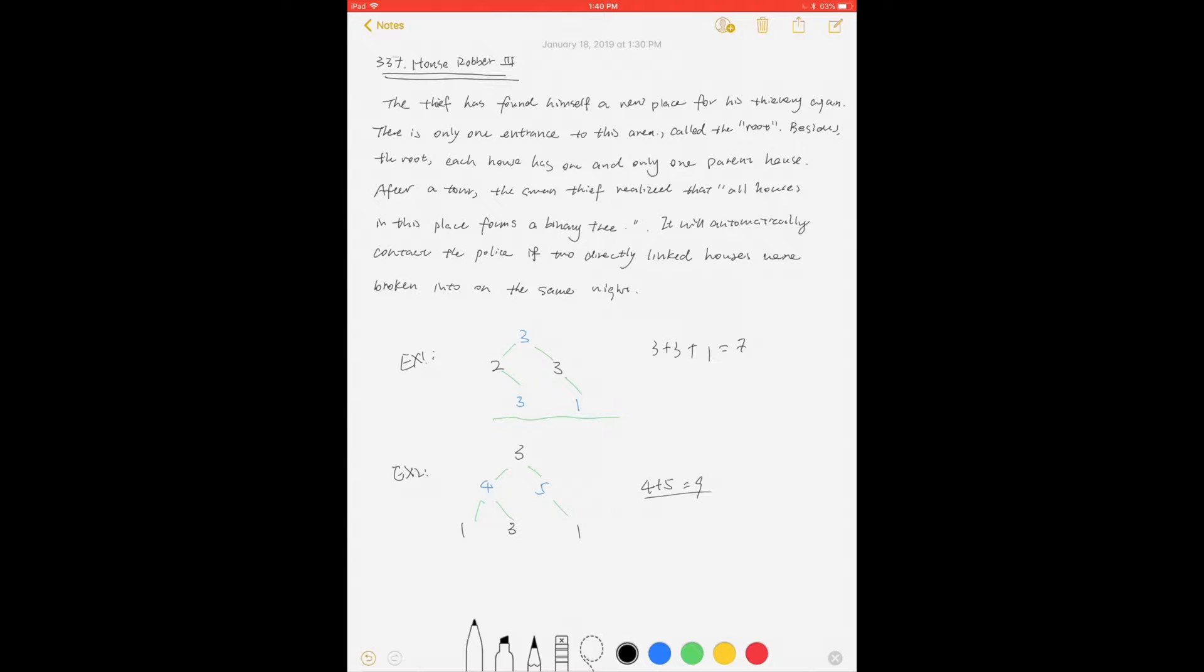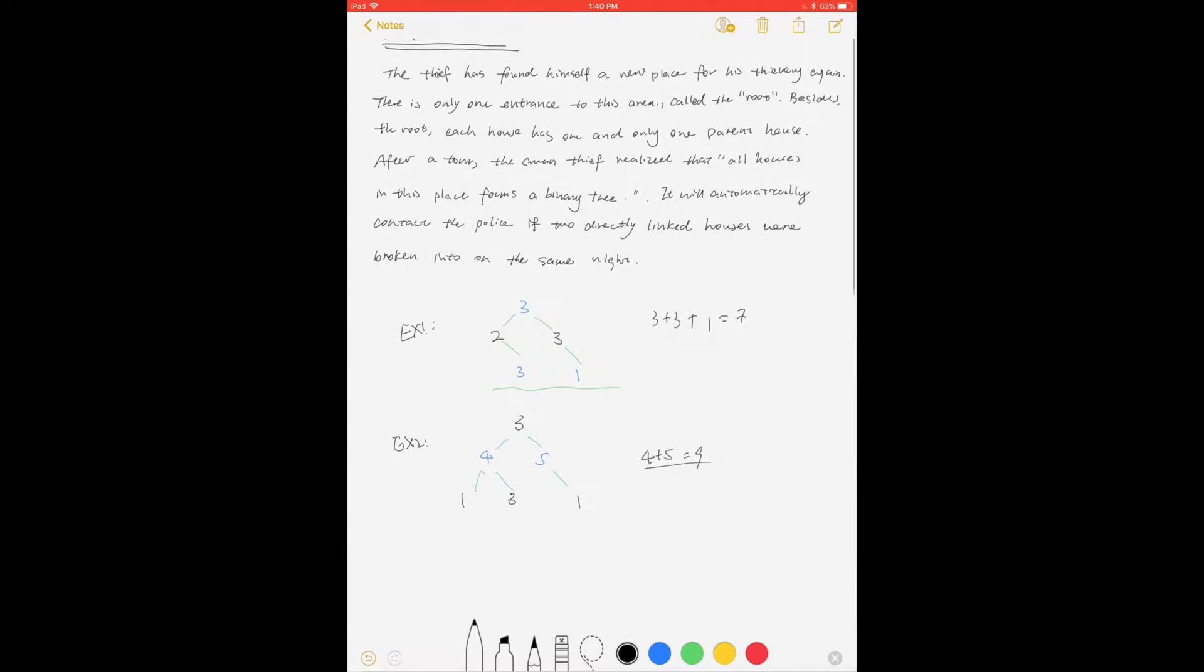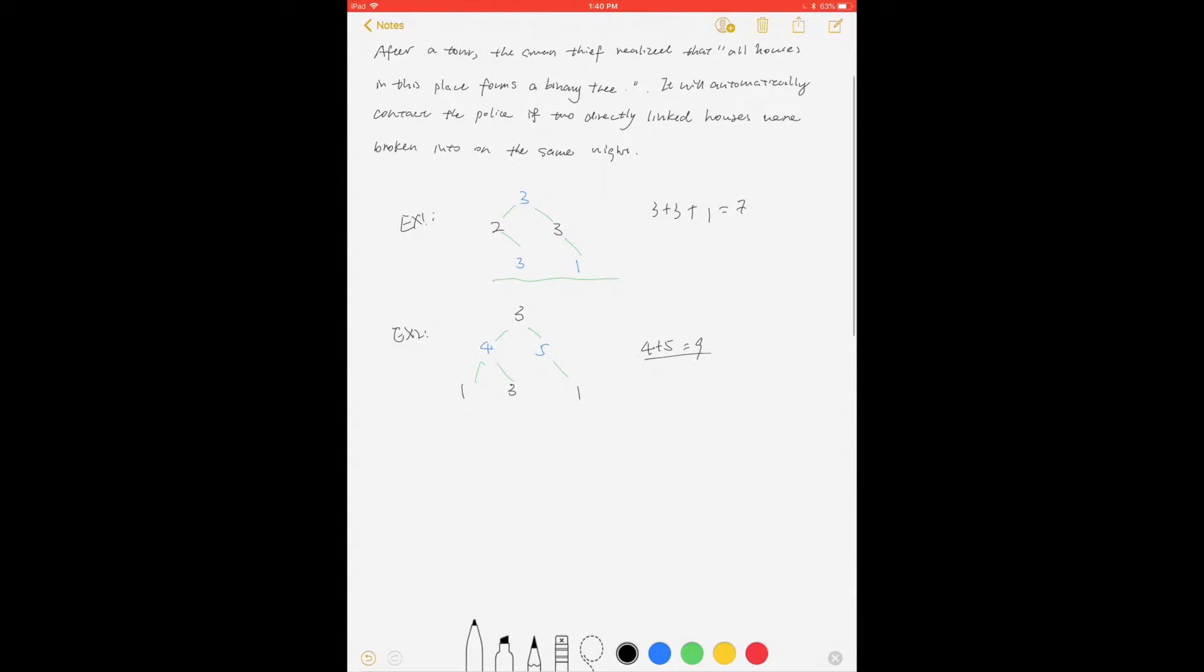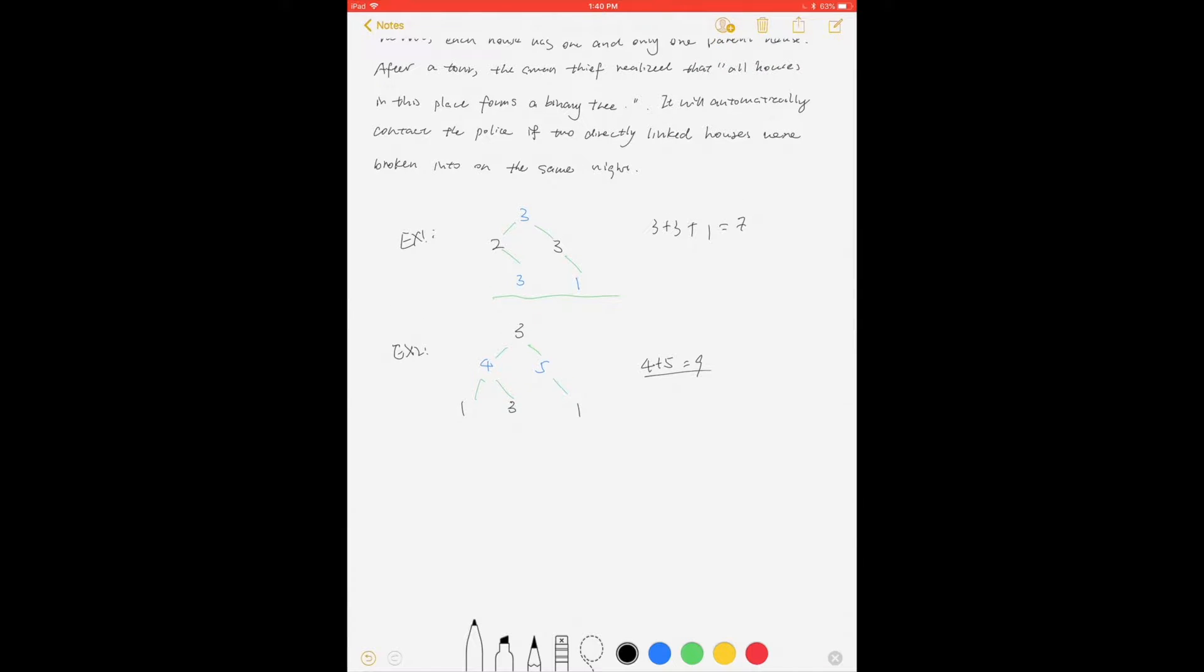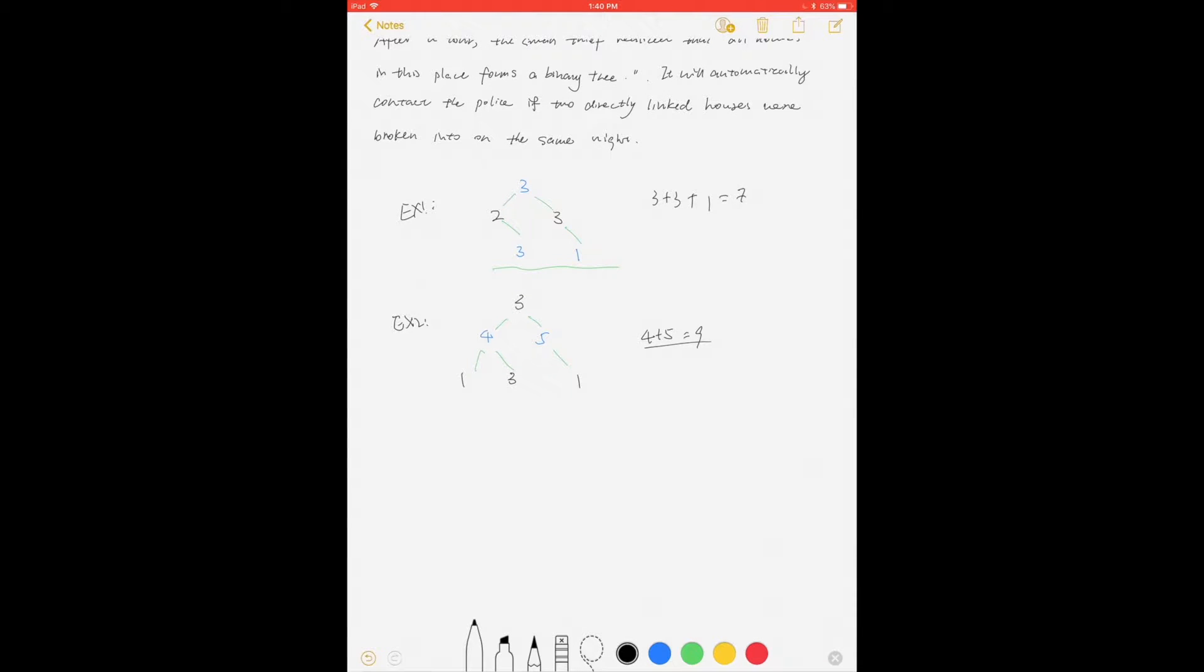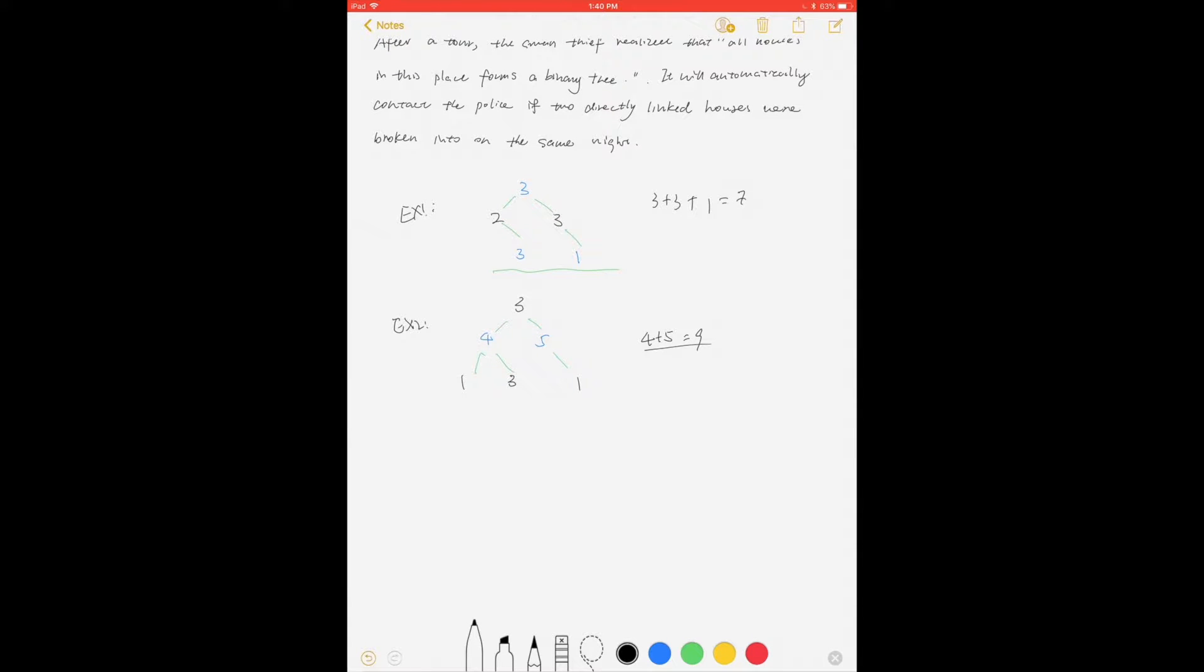if two directly linked houses are broken into on the same night. For example one, we should rob 3, 3, and 1 because it gives the maximum sum: 3 + 3 + 1 = 7. For example two, we should rob 4 and 5 to not trigger any alarm, which is also the maximum sum.